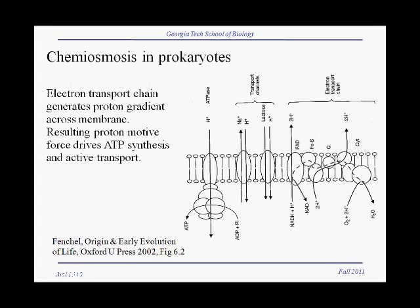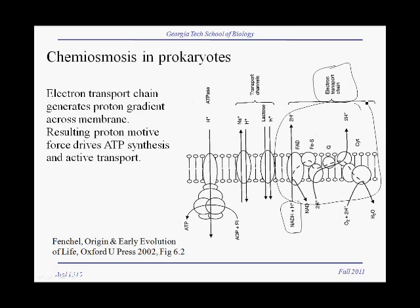Here is an illustration of what's happening in the plasma membrane of prokaryotes. We have electrons — NADH — taking electrons from food or other electron sources and delivering them to the electron transport chain. Here is our electron transport chain in the membrane, where the electrons are going through a series of redox reactions.